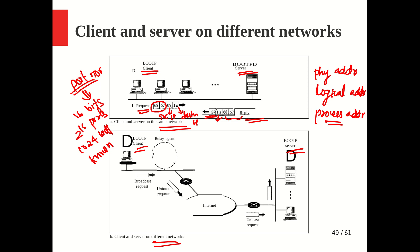The header part is shown with source IP as the server's IP address and destination IP as all ones for broadcasting. The data part contains the actual mapping information — the IP address the client requested. This is how communication works when both client and server are on the same network.